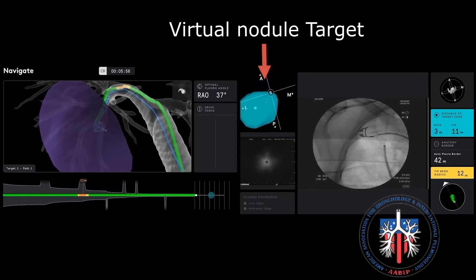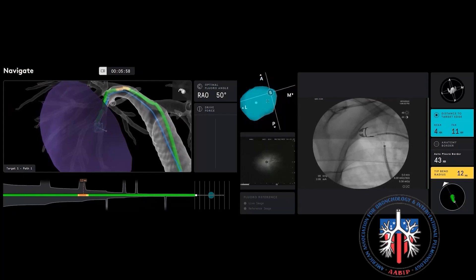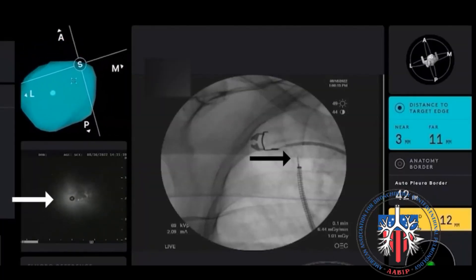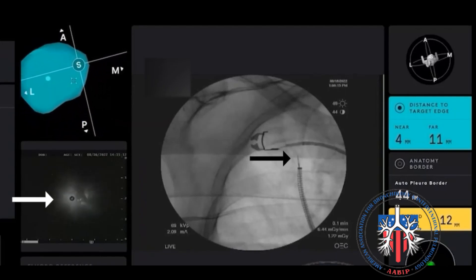Adjustment of the tip of the robotic bronchoscope with radial ultrasound can help achieve a concentric or an eccentric radial ultrasound signal.